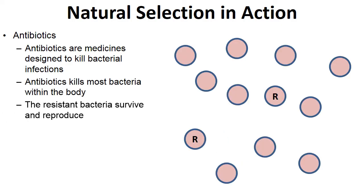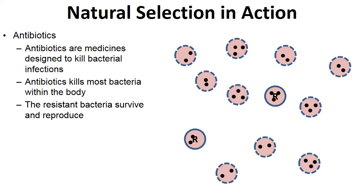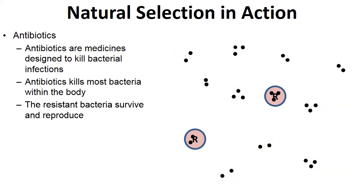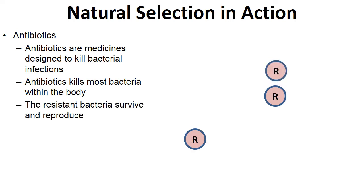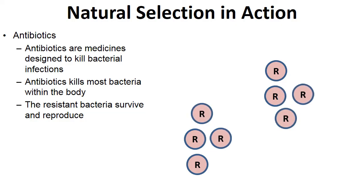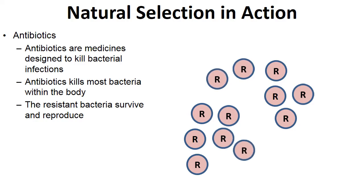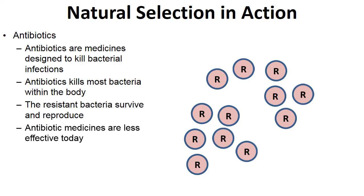Antibiotics work by absorbing into bacteria cells, poking holes in them, and causing them to burst. However, some bacteria possess genes that allow them to resist the antibiotic. When you take an antibiotic, only the non-resistant bacteria die; the resistant ones survive and reproduce. Over time this leaves you with a resistant infection. This is why antibiotics are becoming less effective — a serious and growing problem.